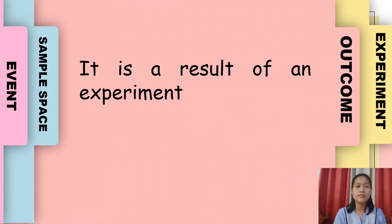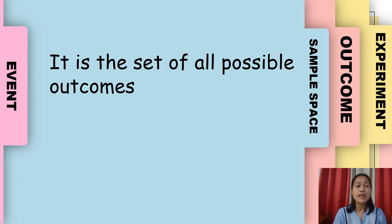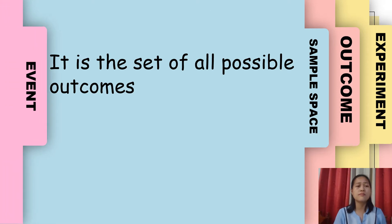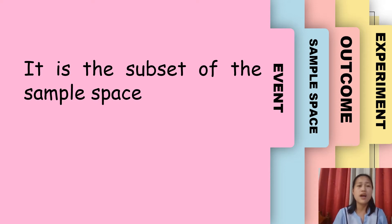We have also the outcome — it is a result of an experiment. For example, if you toss a coin, getting a tail is an outcome. We have the sample space — it is the set of all possible outcomes. In rolling a die, the outcomes could be 1, 2, 3, 4, 5, and 6, and all these possible outcomes are referred to as the sample space. And lastly, we have the event — it is the subset of the sample space. In rolling a die, you have an event of getting 1, 2, 3, 4, 5, or 6.